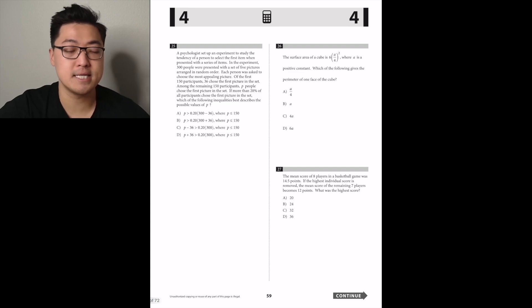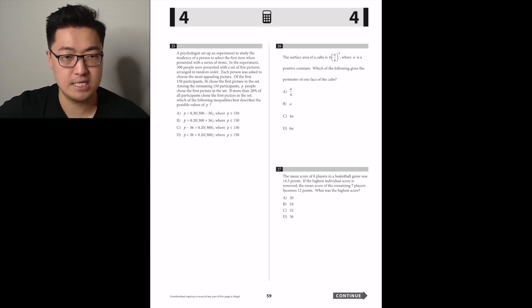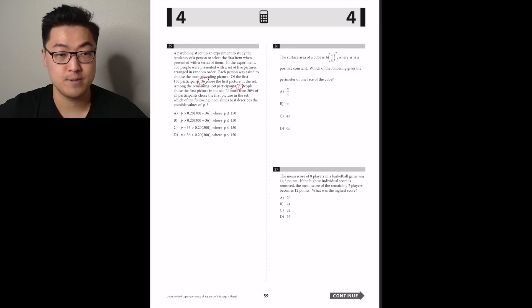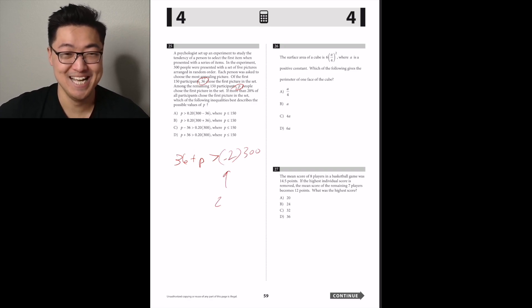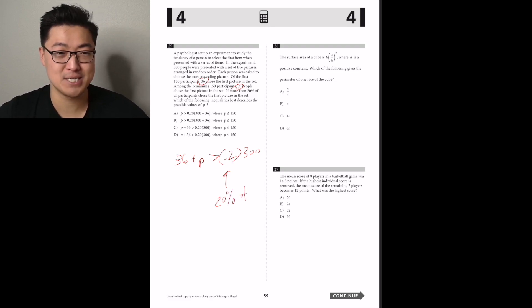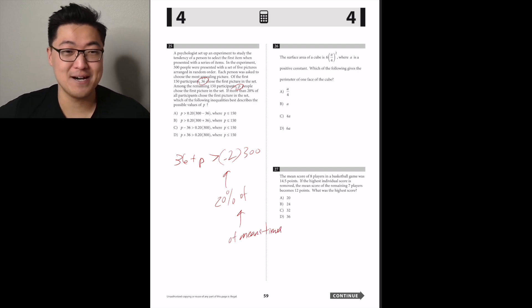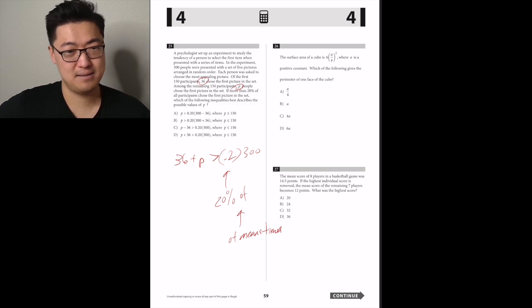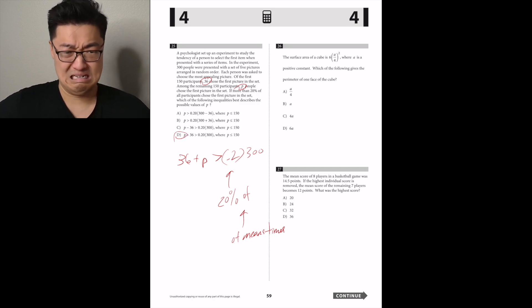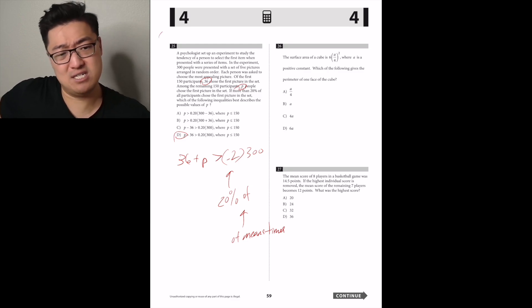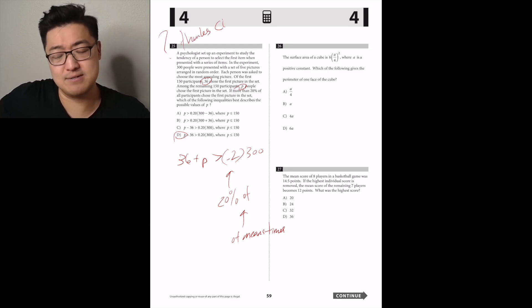A psychologist set up an experiment: 300 people were presented with five pictures; each person chose the most appealing. Of the first 150 participants, 36 chose the first picture. Among the remaining 150 participants, P people chose the first picture. If more than 20% of all participants chose the first picture, which inequality describes the possible values of P? So 36 plus P is greater than 20% of 300, which is 60. Answer D.